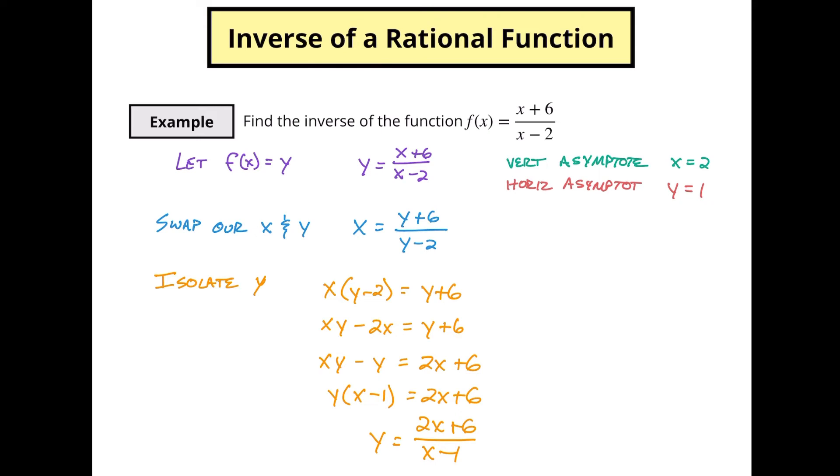Now we know when we find the inverse of functions we're basically swapping our x and y's, just like we did right here. This is part of the big idea of finding an inverse. So now all the x values for this function are the y values for this function, and all the y values for this function are the x values for this one. So we should have reversed our vertical and horizontal asymptotes.